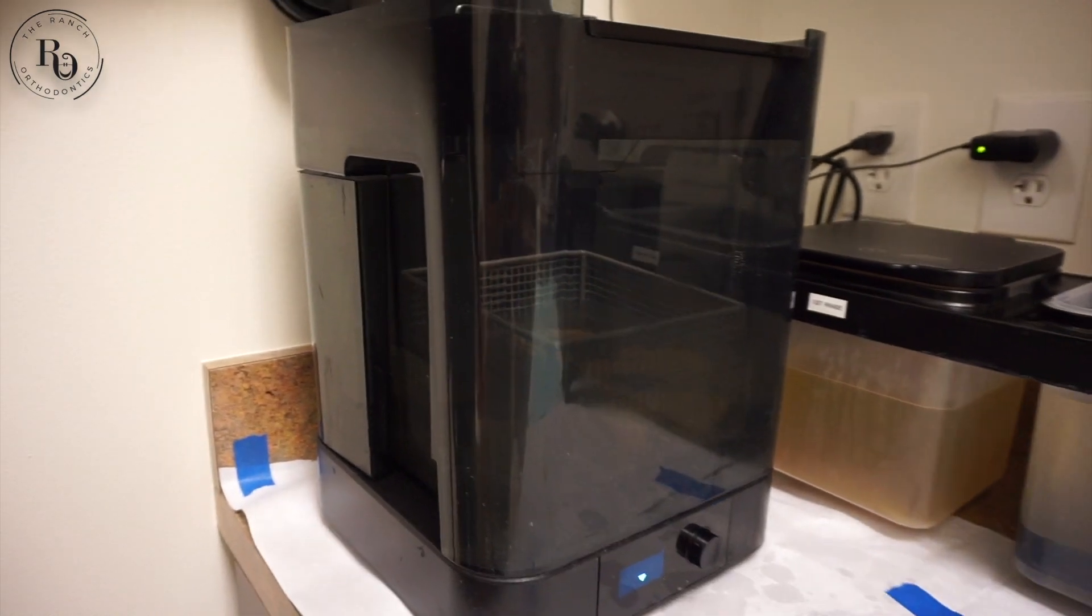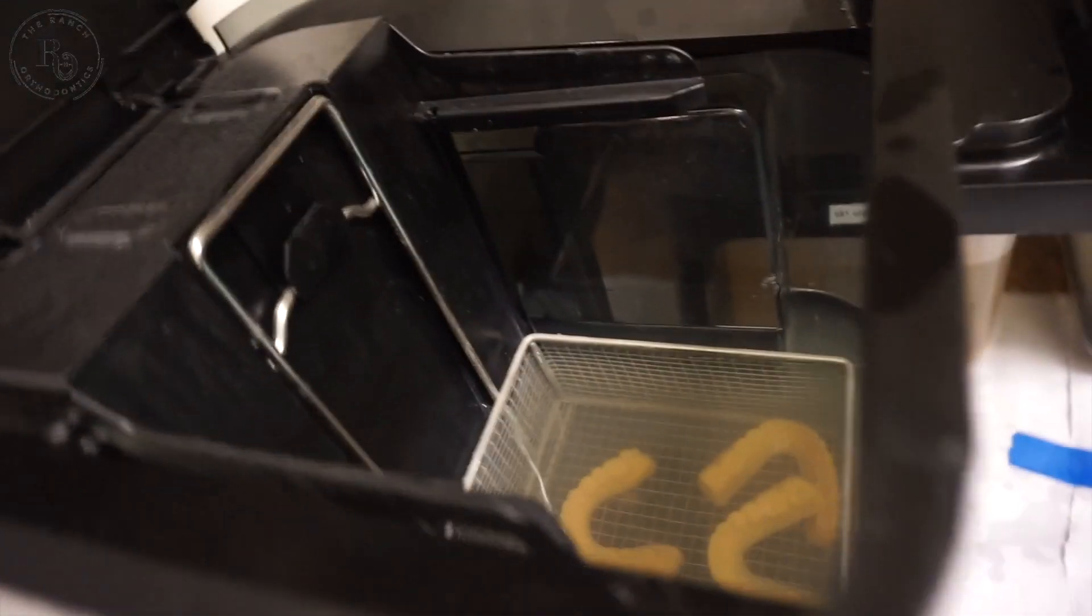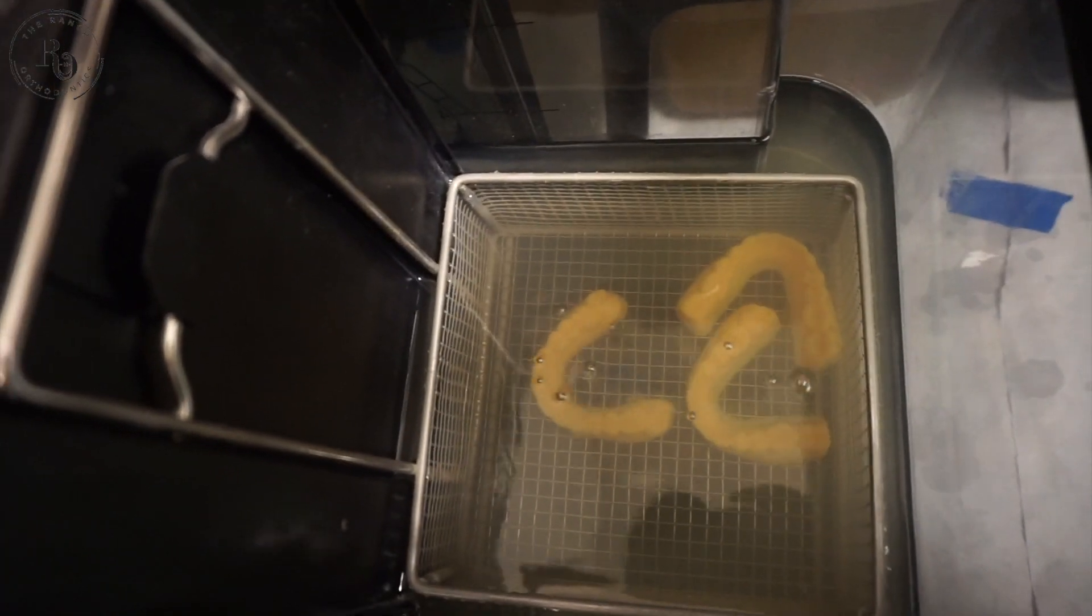This is 99% isopropyl alcohol. It is going to wash away all the uncured resin, so we have a nice clean model of just the cured resin. It's going to go for a little spin in here.